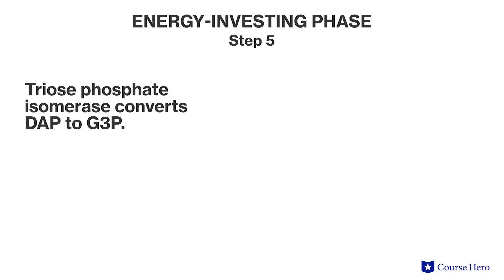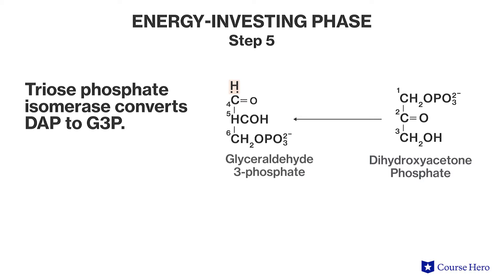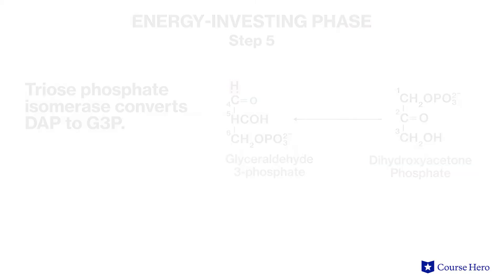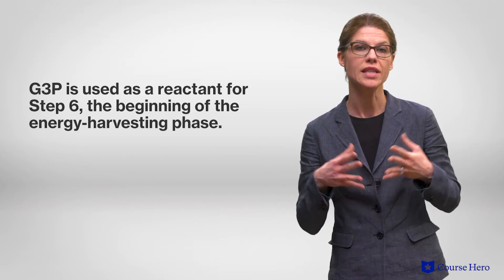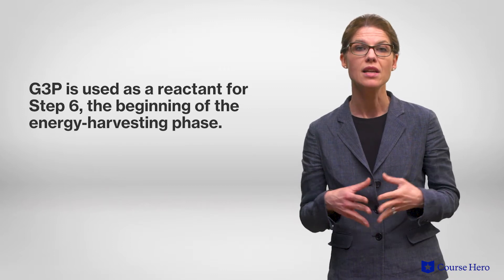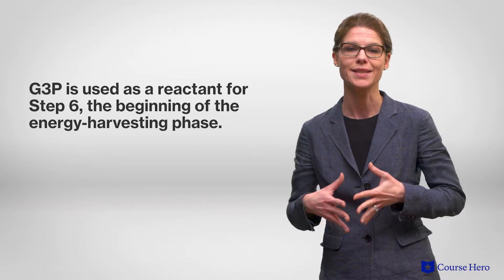Step five: triose phosphate isomerase converts DAP to G3P, which is an isomer of DAP. This reaction is fully reversible but proceeds in this direction because the G3P is immediately used as a reactant for step six, the beginning of the energy-harvesting phase.